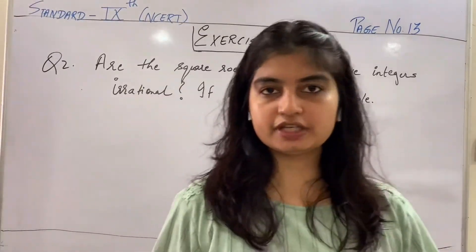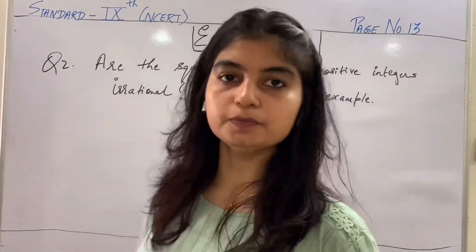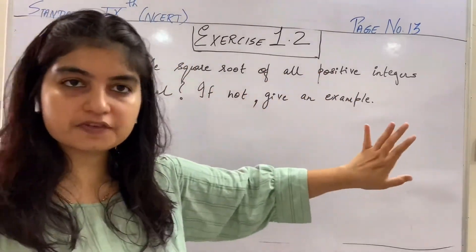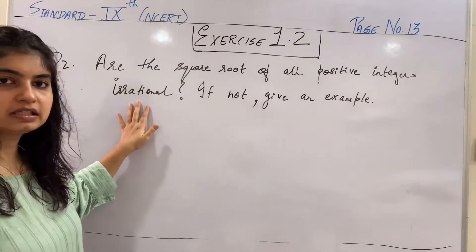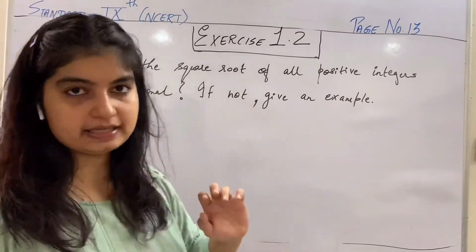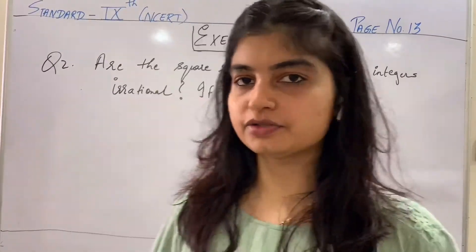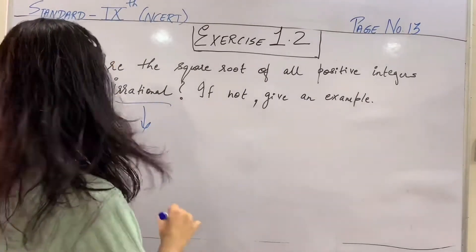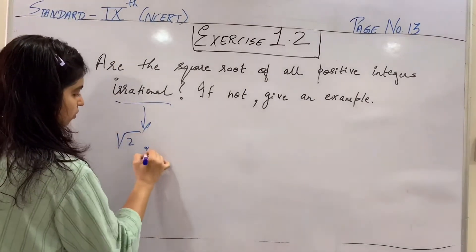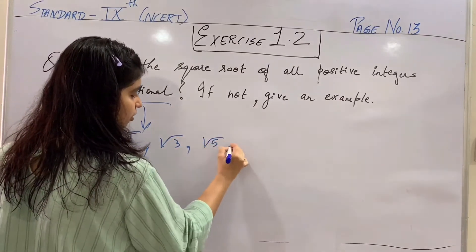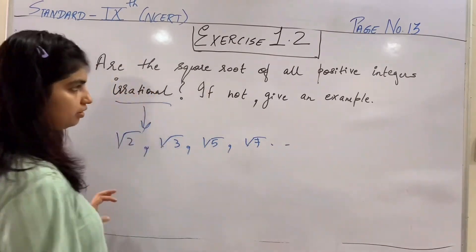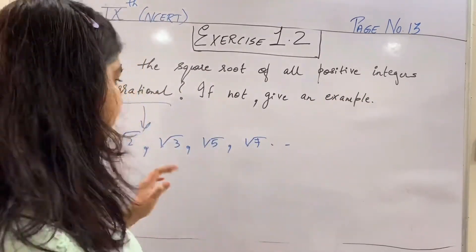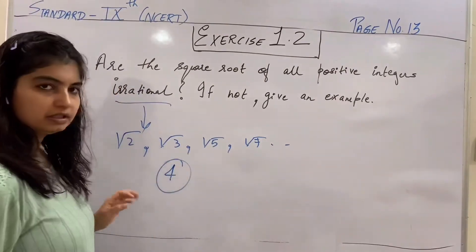Coming to the next question, that is question number 2 of exercise 1.2. Is mein kya keh raha hai, are the square root of all the positive integers irrational? If not, give an example. So abhi tak humne irrational numbers ke examples kya kya dekhe. We saw examples of irrational numbers in the very first lecture. Kya kya tha wahan? Root 2, root 3, root 5, root 7 and so on. Abhi haan pe hi baat kar raha positive integers ki. Right? Toh even you can say 4 is a positive integer. Is 16 a positive integer? Yes.